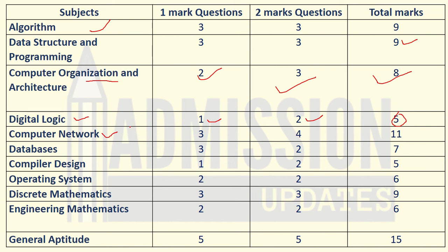In Computer Networks, three one-mark questions and four two-mark questions were asked, with a total of eleven marks allotted to this section. For Databases, one one-mark question and two two-mark questions were asked, totaling seven marks from Databases.